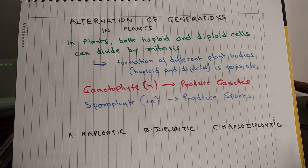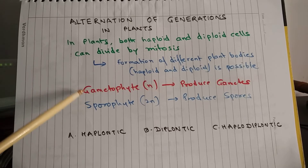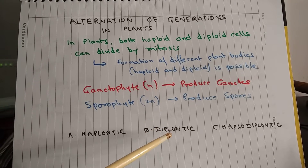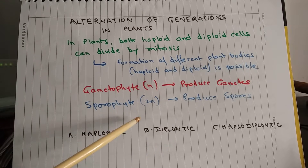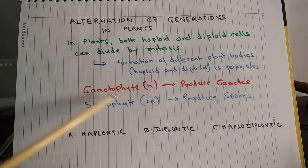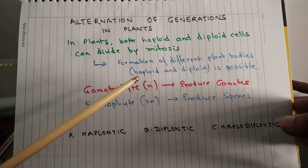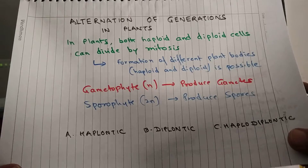As the name suggests, in case of haplontic type, the haploid phase — that is gametophyte phase — will be dominant. In case of diplontic type, the diploid phase or sporophyte phase will be dominant. And in case of haplodiplontic type, both gametophyte and sporophyte phases will be of almost equal length and both of them can be independent.